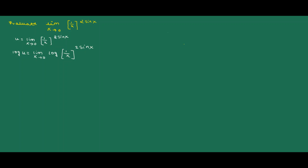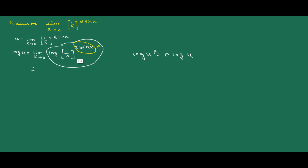Now by using logarithmic property, this log(1/x²)^(sin x): we know that log(u^p) can be written as p·log(u). So in place of p we have sin x, and 1/x is u. By using that, we can write it as limit x tends to 0 of 2·sin(x)·log(1/x).